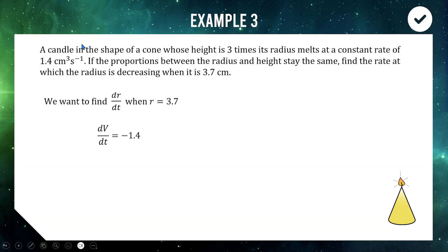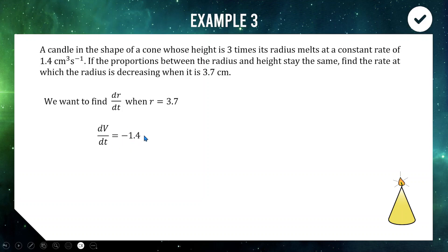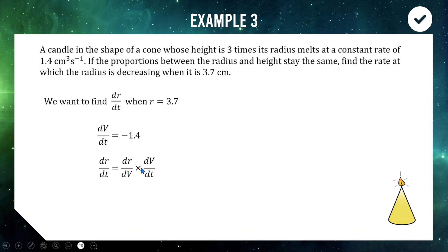Since the candle is melting at 1.4 cubic centimetres per second, dV/dt = −1.4. It's negative because we're melting — decreasing — so the rate of change is negative. An increase is positive; a decrease is a negative derivative. Splitting dr and dt apart and filling in the gaps with the extra variable — volume — we write dr/dt = (dr/dV) × (dV/dt). We need a relationship between the radius and the volume of this cone.